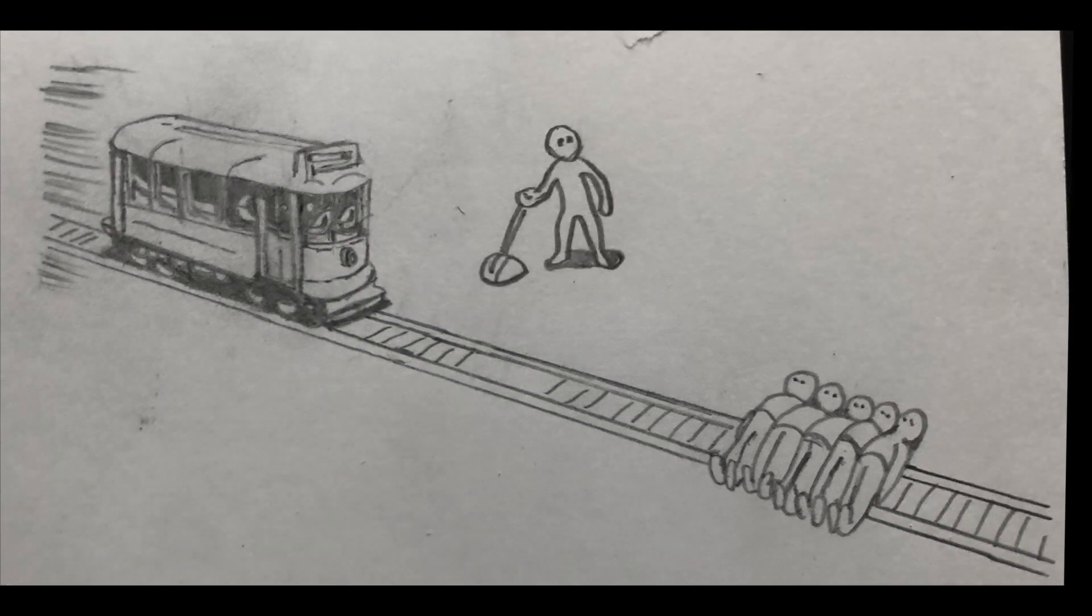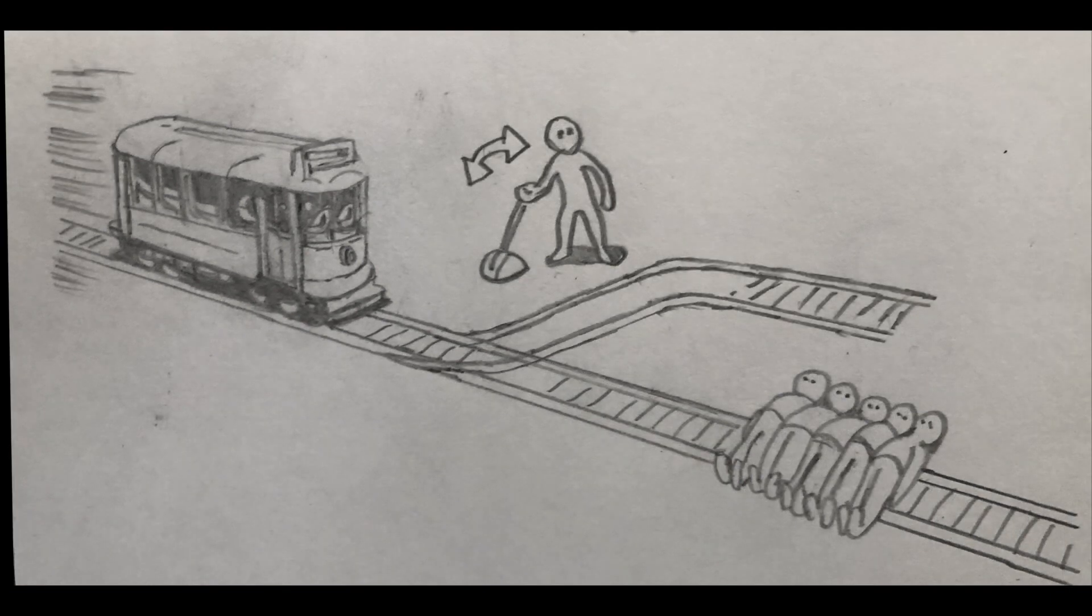You are standing some distance off in the train yard, next to a lever. If you pull this lever, the trolley will switch to a different set of tracks.